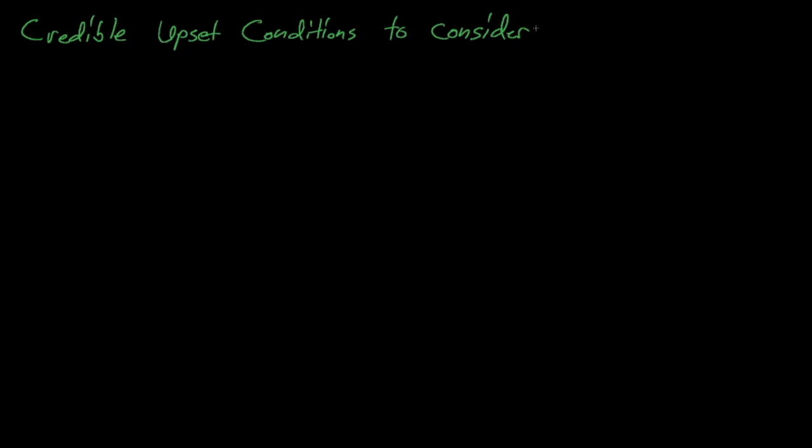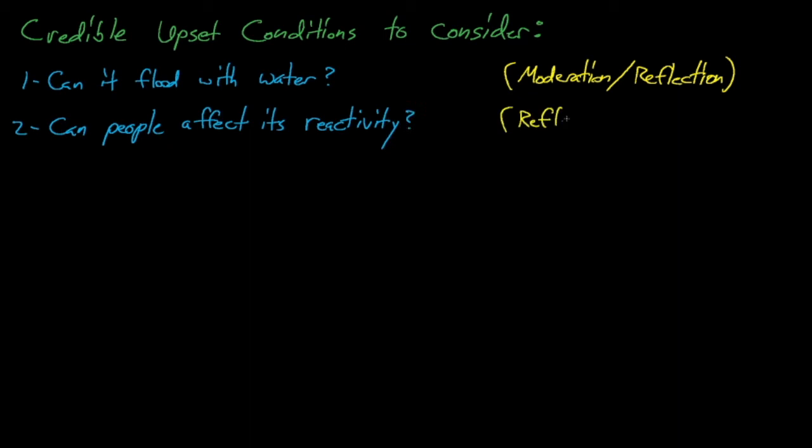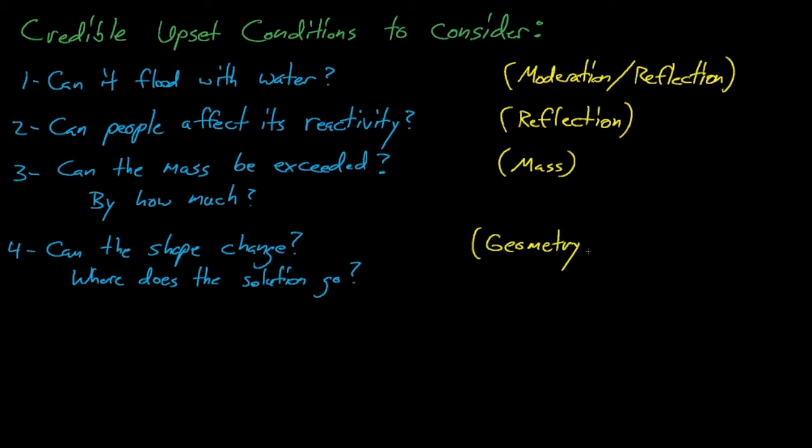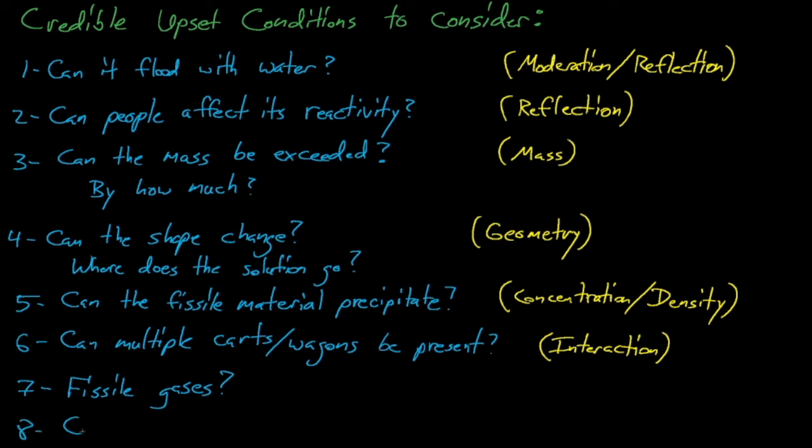So a good generic roadmap for determining credible abnormal upset conditions includes considering can something, the container, the room, flood with water? Can people affect the reactivity to a significant degree? Can the mass of fissile material be exceeded? If so, then by how much? Can the shape of the tank change? If so, where does the solution go? Does it spill out somewhere? And if it spills, where does it accumulate? Next, can the fissile material precipitate out of solution and get deposited somewhere unexpected? Can multiple carts, wagons, or units be present to interact with each other? Are there any fissile gases that are likely to enter the area? And lastly, can an array or storage rack collapse resulting in a loss of interaction control? So those are some credible abnormal upset conditions that we need to consider. Now what are some conditions that we don't need to consider?